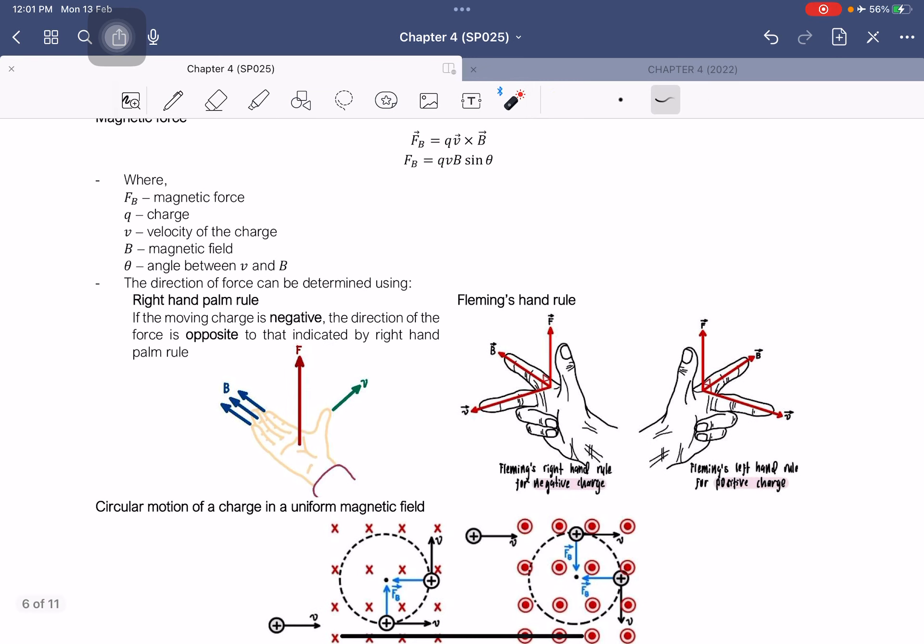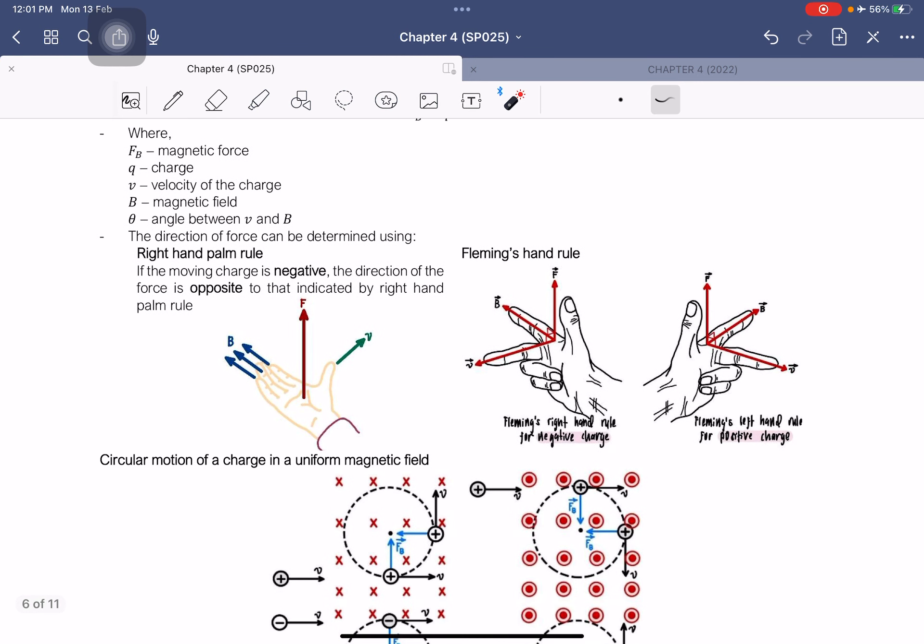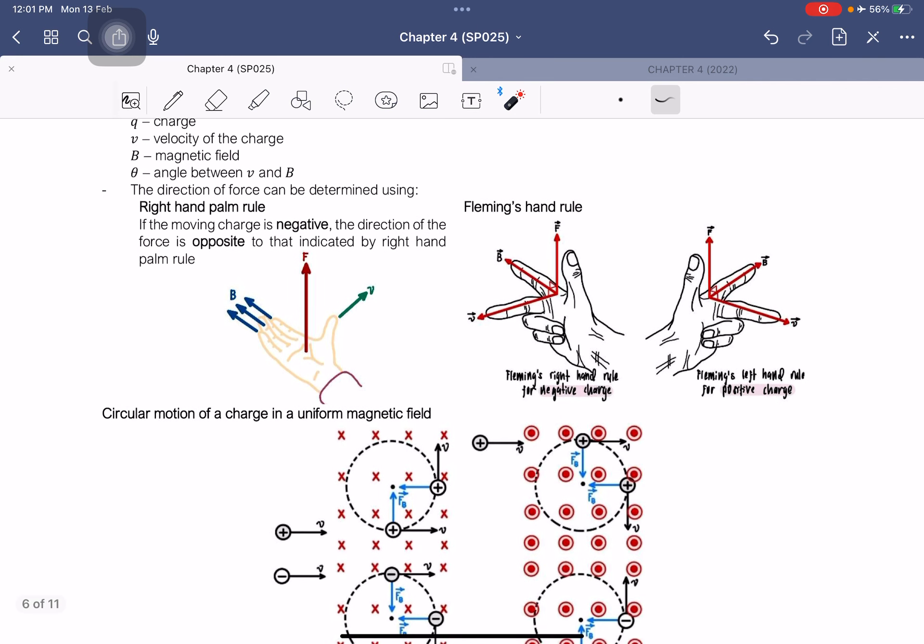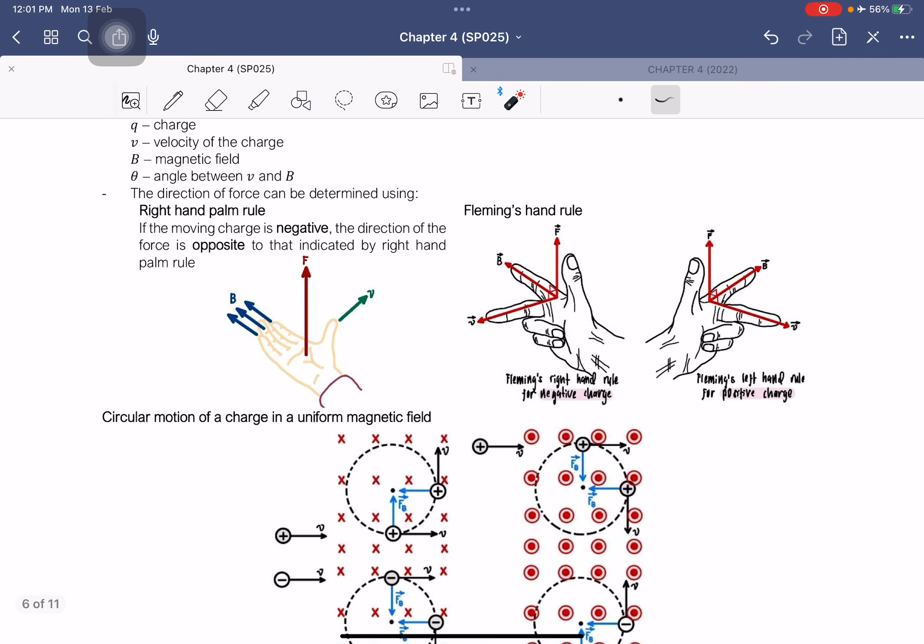The direction of this force can be determined using either the right hand palm rule or Fleming's hand rule. For the right hand palm rule, if the moving charge is negative, the direction of the force will be opposite to that indicated by the right hand palm rule. So instead of the palm, it's the back of the hand that gives you the direction of force for negative charge.